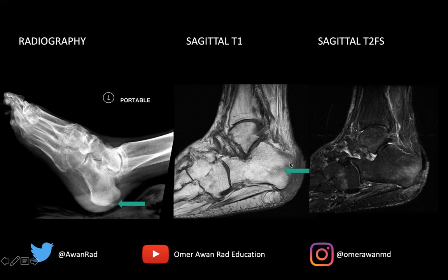On the sagittal T1, we have confluent dark T1 hypointense signal that replaces the normal fatty marrow of the calcaneal tuberosity, and the soft tissue ulcer that appears dark. When T1 hypointense signal replaces the normal fatty marrow, that indicates a marrow proliferative or marrow-replacing process. In this case, this is a marrow-replacing process because you have cells that normally don't live in the marrow infiltrating it, as in acute osteomyelitis.